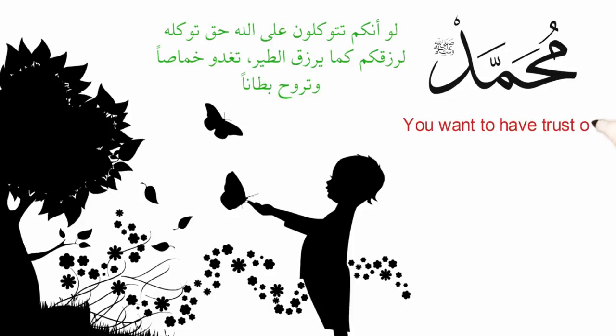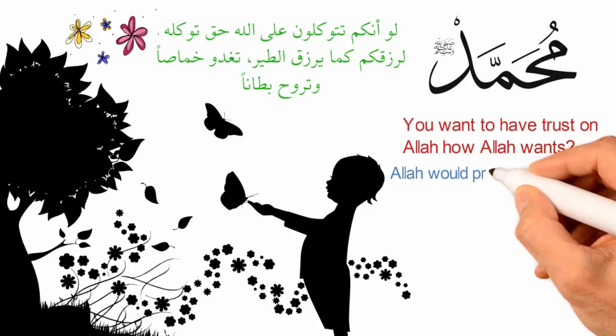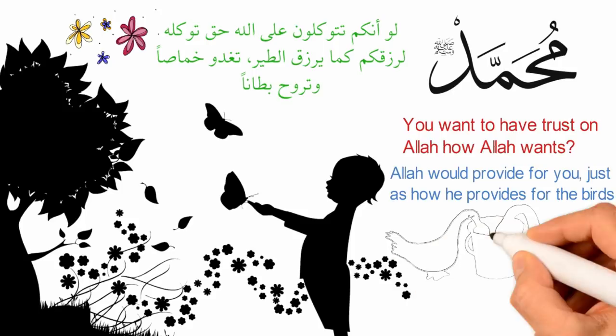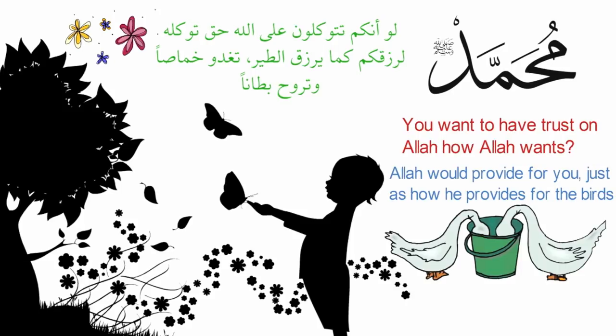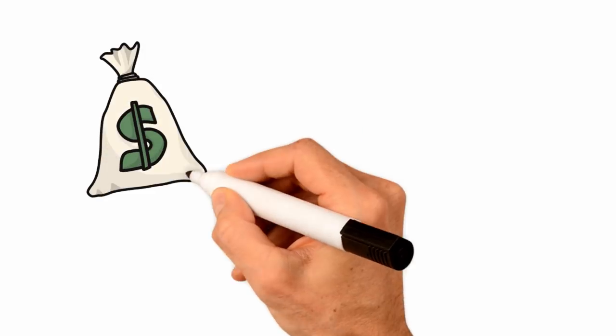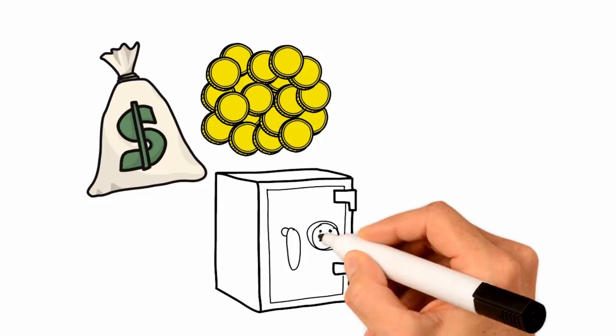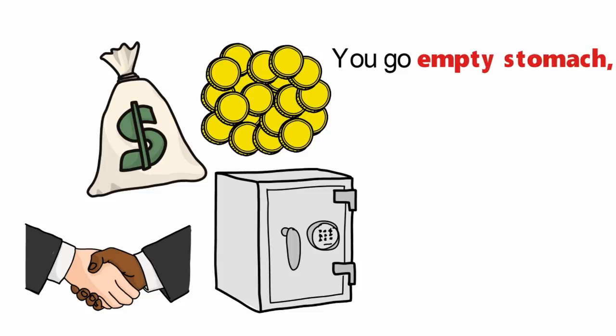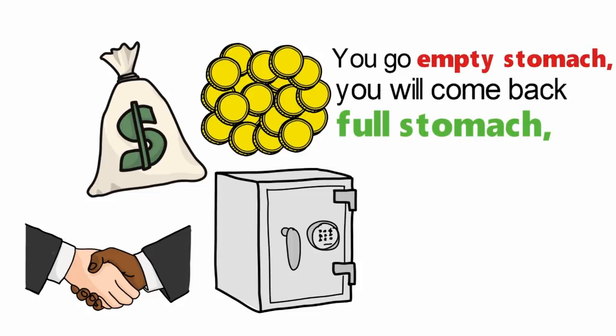Nabi mentions you want to have tawakkul on Allah as how Allah ordered, how Allah wants, Allah will provide for you just as how he provides for the birds. You haven't got to worry about storing so much, this plan, that savings account, this savings account, that investment, that investment. Allah says you go empty stomach, you will come back full stomach. This is the wa'bah of Allah.